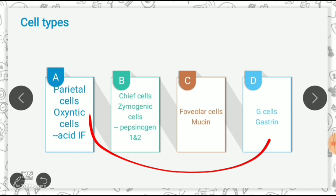Acid secretion is divided into three phases. The cephalic phase occurs when you see, smell, or taste food — acid, pepsinogen, and mucus are released. Once food enters the stomach, it is the gastric phase. The intestinal phase is actually a negative phase — once food reaches the intestine, acid secretion is inhibited. So there are three phases: cephalic, gastric, and intestinal.